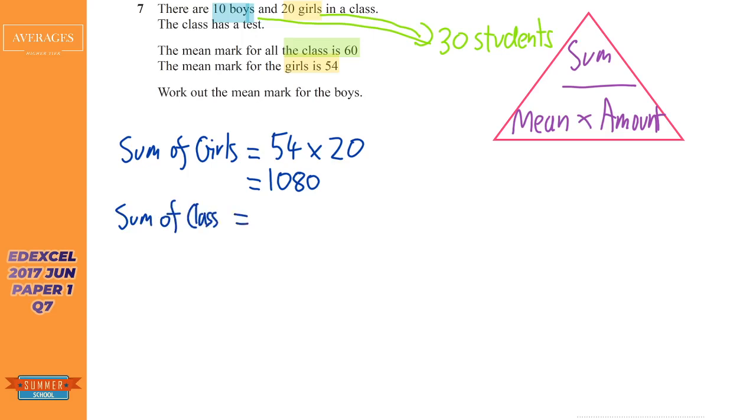Next we need to know it for the class. Sum of class. So the mean for the class is 60 and the amount for the class is 30. So 60 times 30, I can't believe I'm using a calculator for that but if you've got it why not.